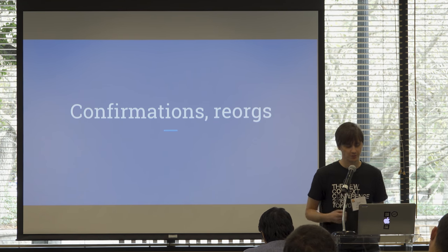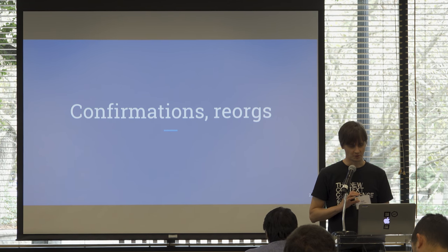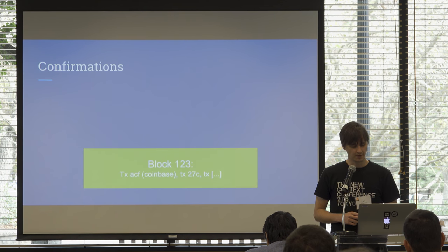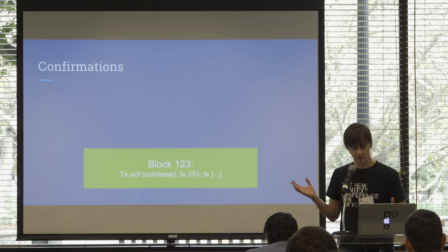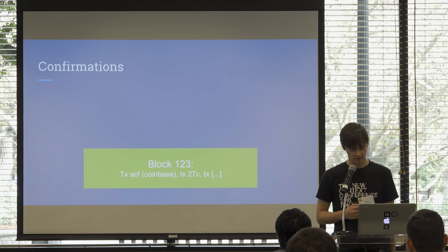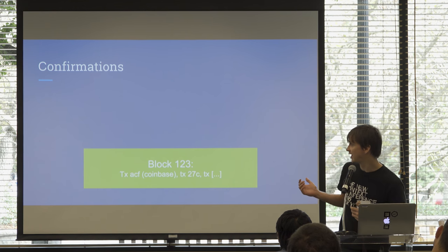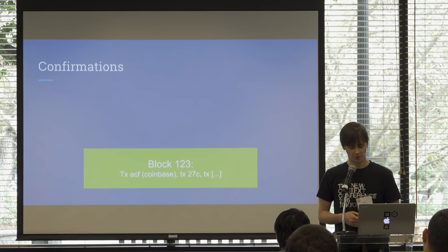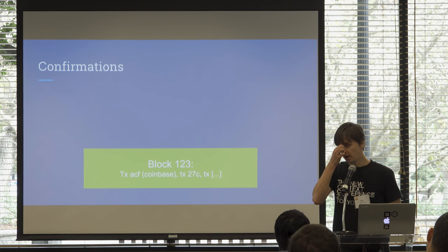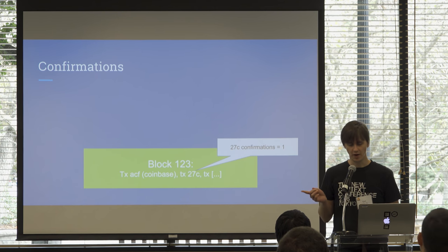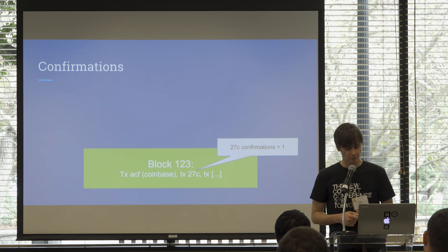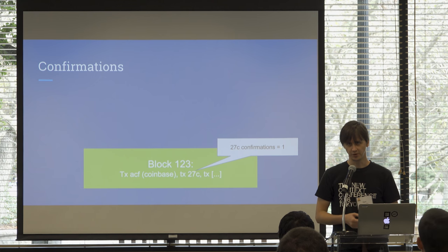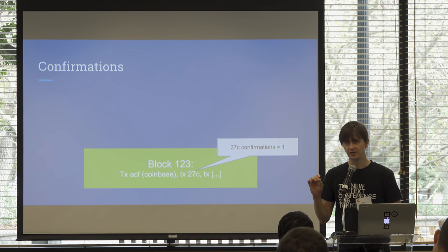The most important thing first: you should be quite aware of how confirmations and reorgs work in Bitcoin, because it's different from everything else out there. We have a block, and in the block we have a transaction — here I call it 27C — it's right in there in the block: block one, two, three. This transaction has one confirmation, because it's been added to a block. As soon as the transaction is in a block, it has one confirmation. Before it's in a block, it has zero confirmations.